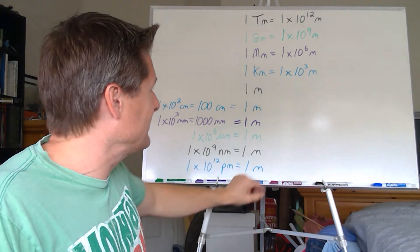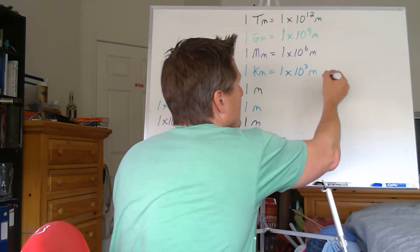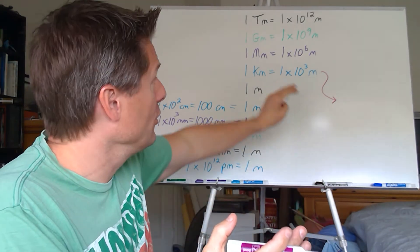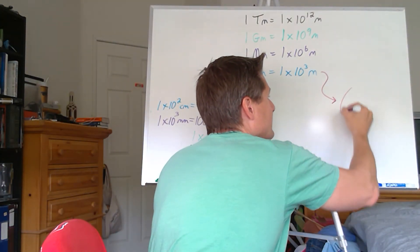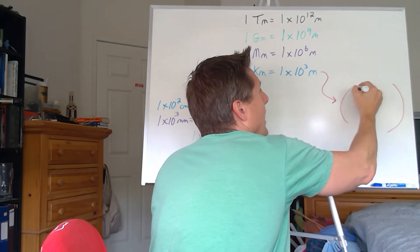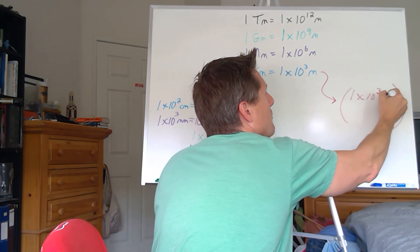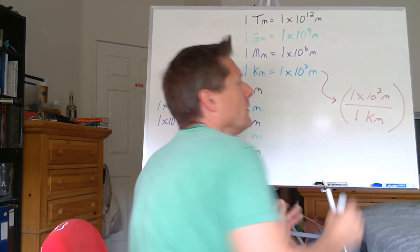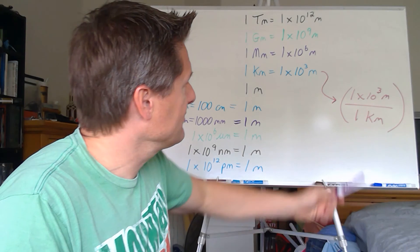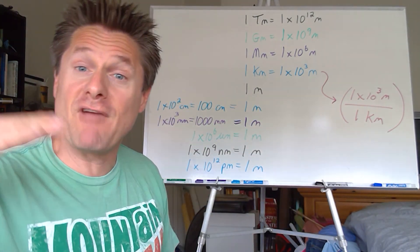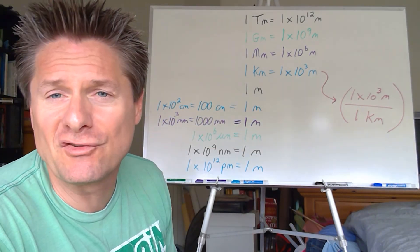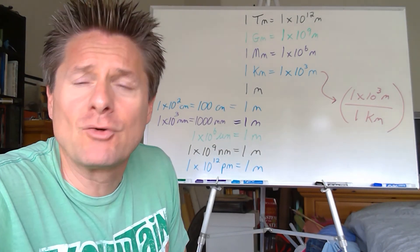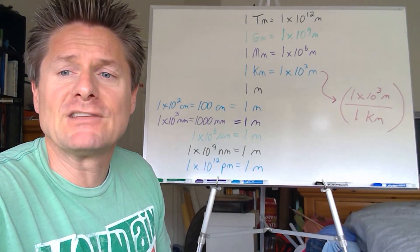We can take these expressions and set them up as conversion factors when we do unit line equations and dimensional analysis later. For example, one kilometer equals 1×10³ meters can be expressed as a conversion factor. Make a note card for the prefixes I marked with green dots, and have at it — let's do it.